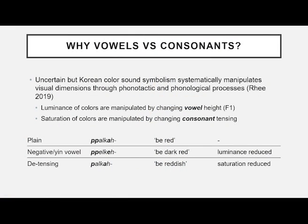Why do we find different results for vowels and consonants? As it happens, Korean color sound symbolism is a very elaborate system where you can create thousands of color words by inflecting them. The primary way of inflecting is to change the luminance of a color by changing the vowel height, or F1, which is exactly what we found in our data. So changing 'a' to 'e' makes it darker. And for saturation, you can modify this by changing the consonant in the plosive — giving the same combination of saturation-consonants and luminance-vowels.